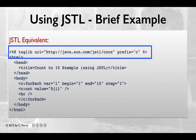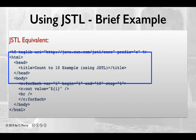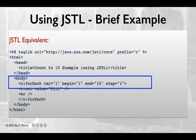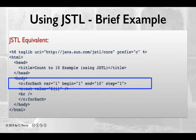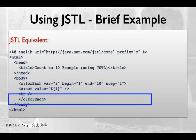First, we see a tag that just specifies which part of the JSTL library will be used — in this case, the core portion of the library. We see our regular HTML head section and we start the body. Now we see a new JSTL tag. Note that much of this is in the form of HTML with the angle bracket delimiters, followed by a keyword, and then parameters with the name-value pair format. In this case, we're using the core tag forEach. And you'll note we have a partner closing forEach tag, just like in HTML.